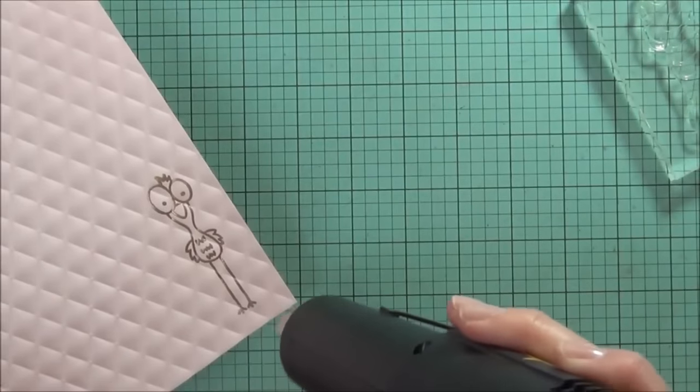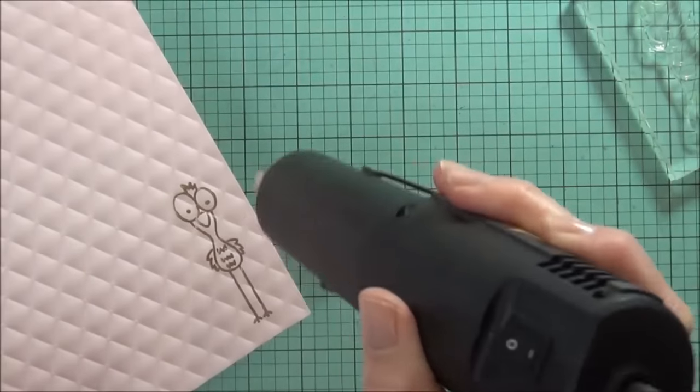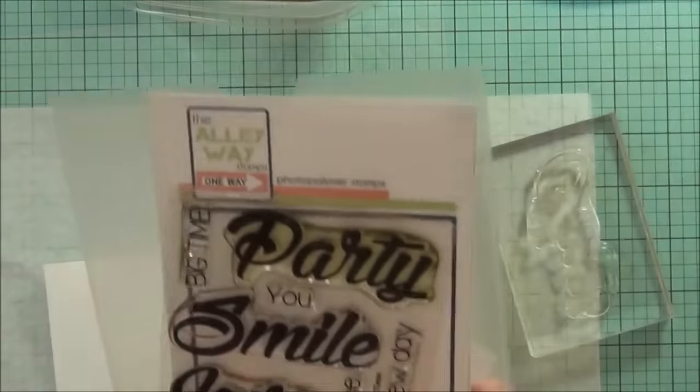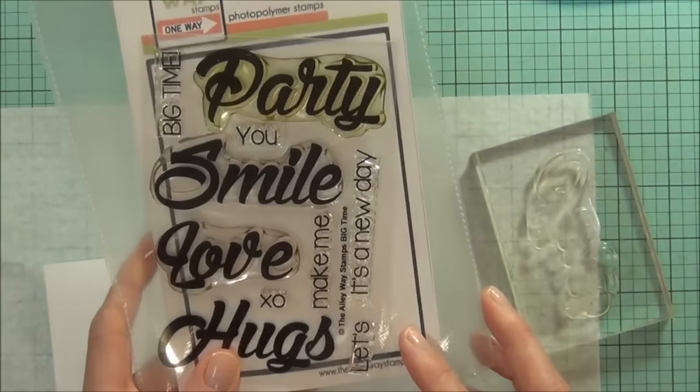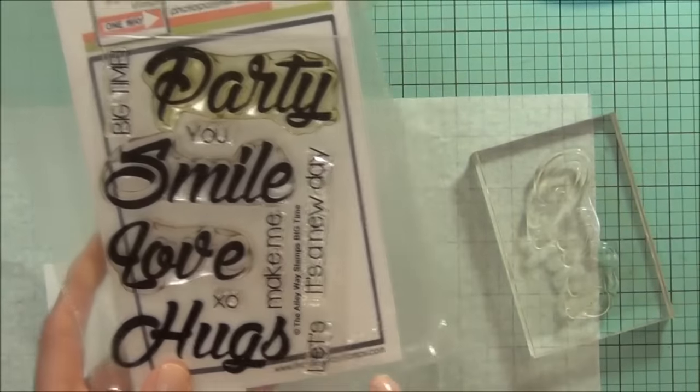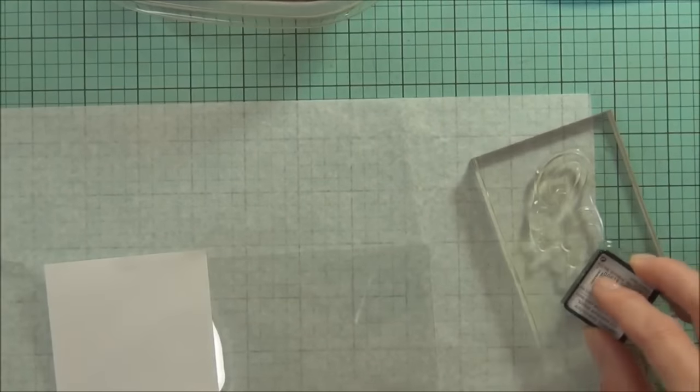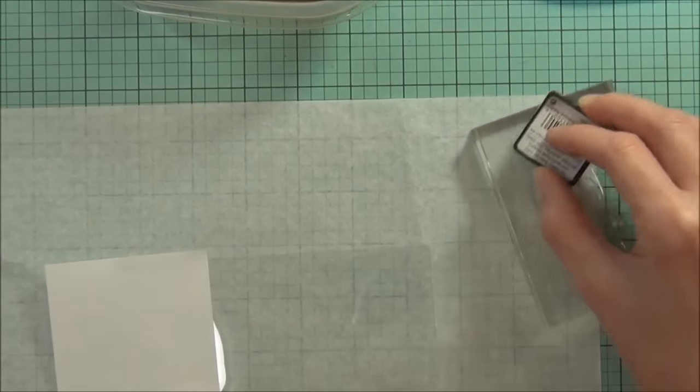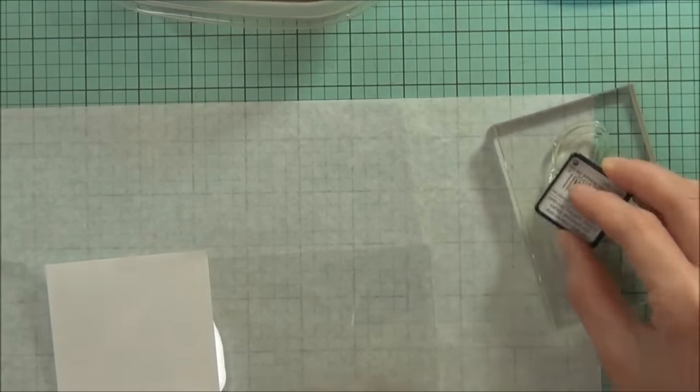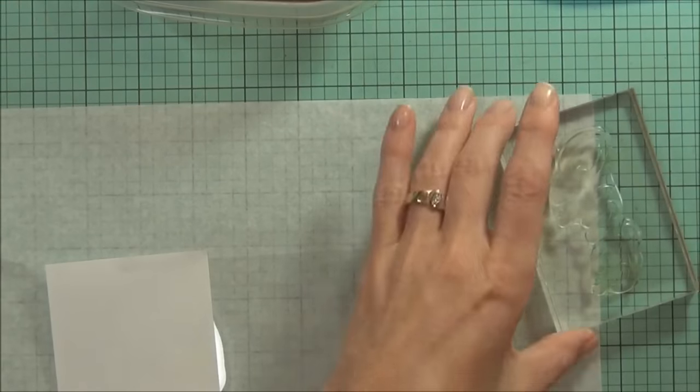So I just hit that with my heat tool. For my sentiment, I wanted to use this word 'hugs' from the set called Big Time. It's a really great sentiment set and I did want to emboss it in gold, but I knew that was never gonna happen on that textured cardstock.